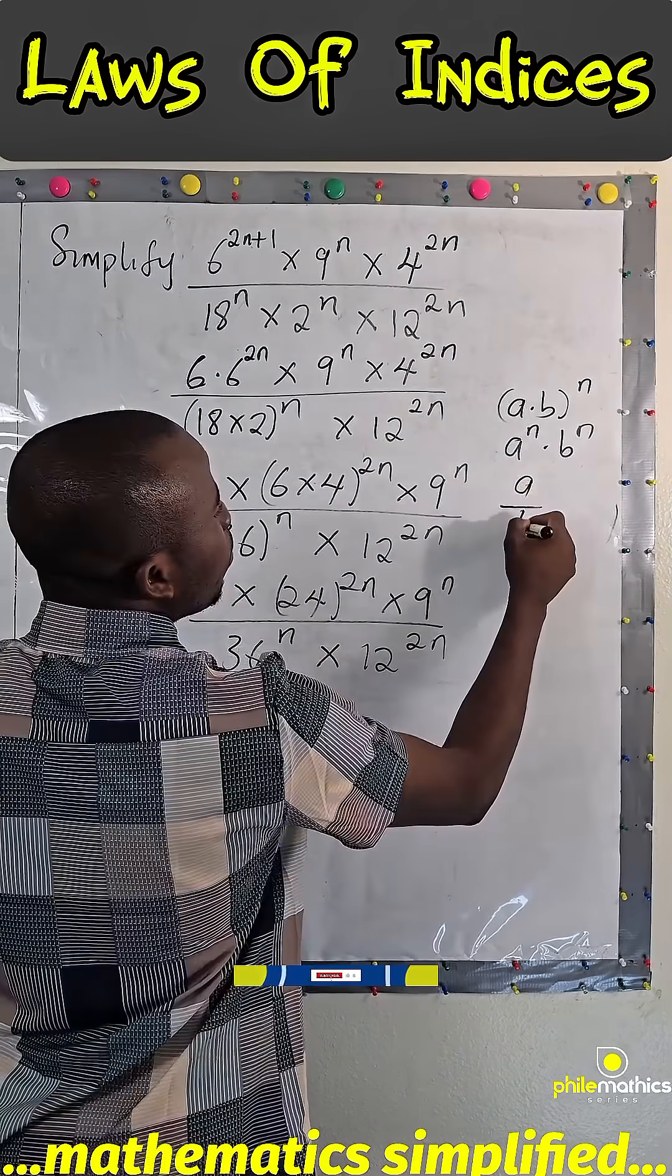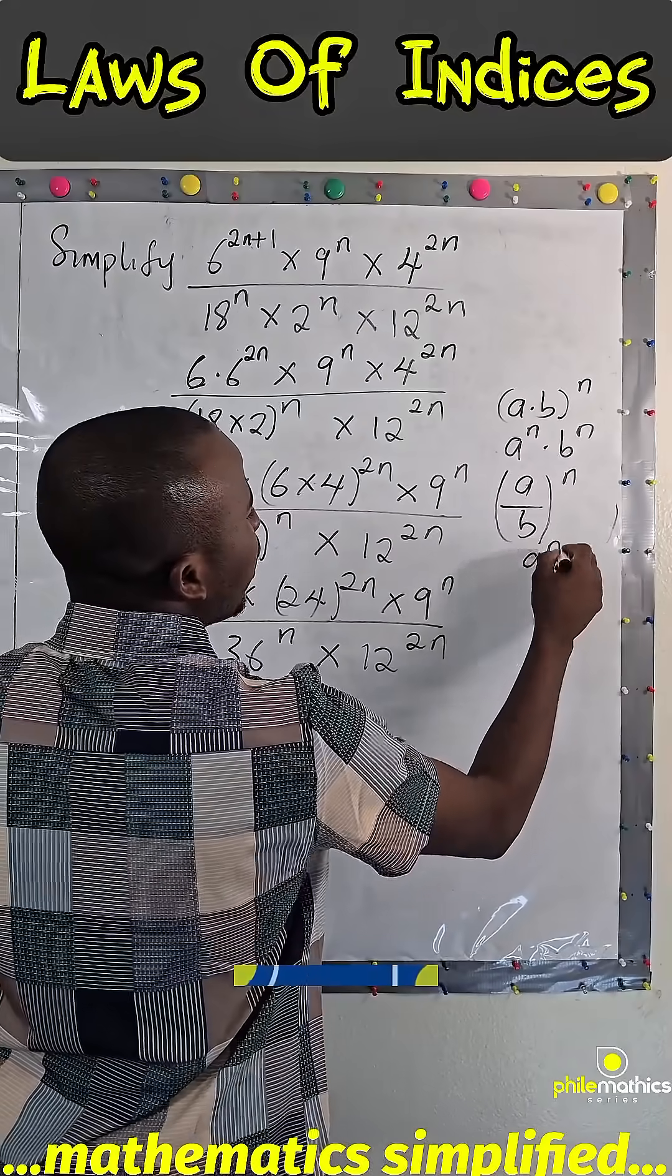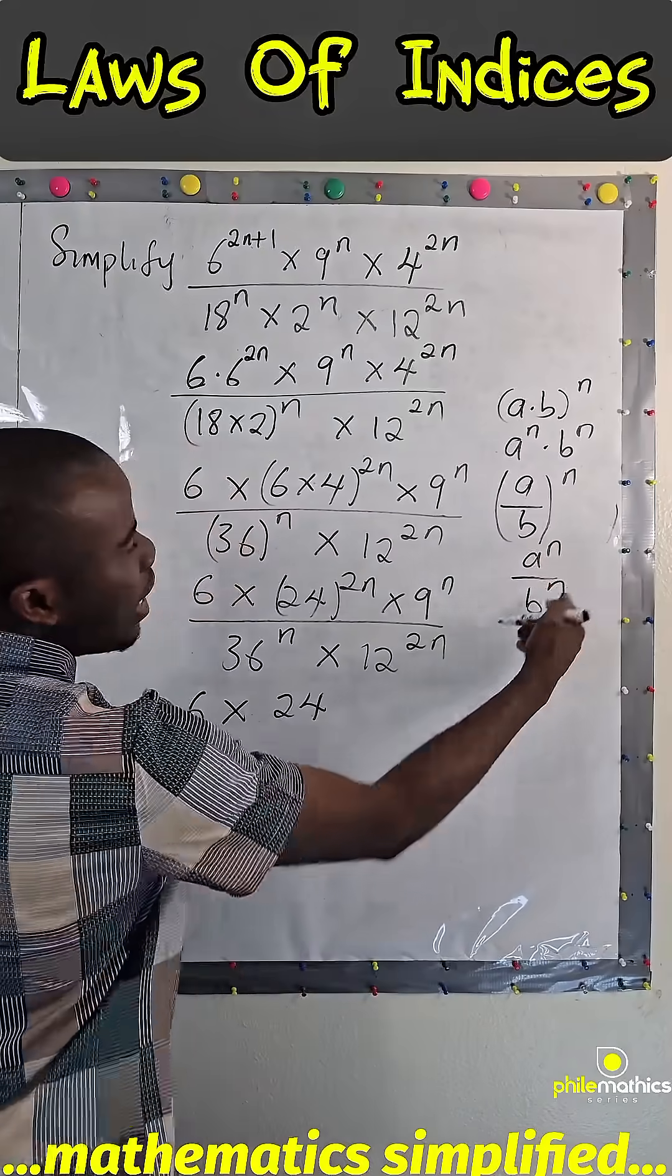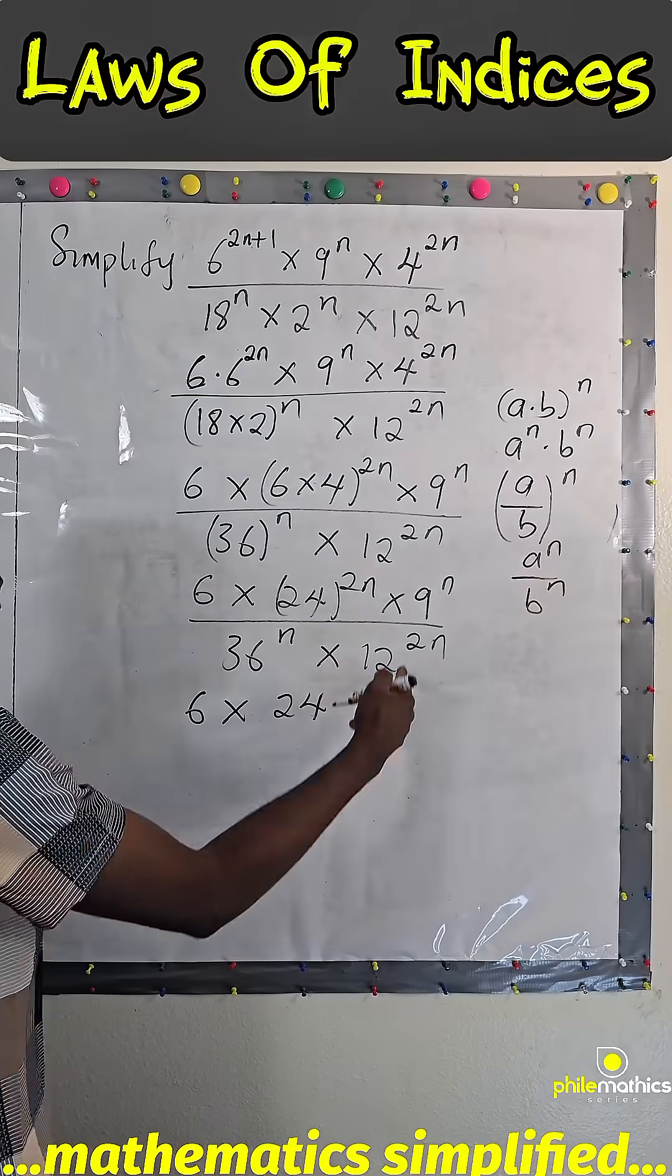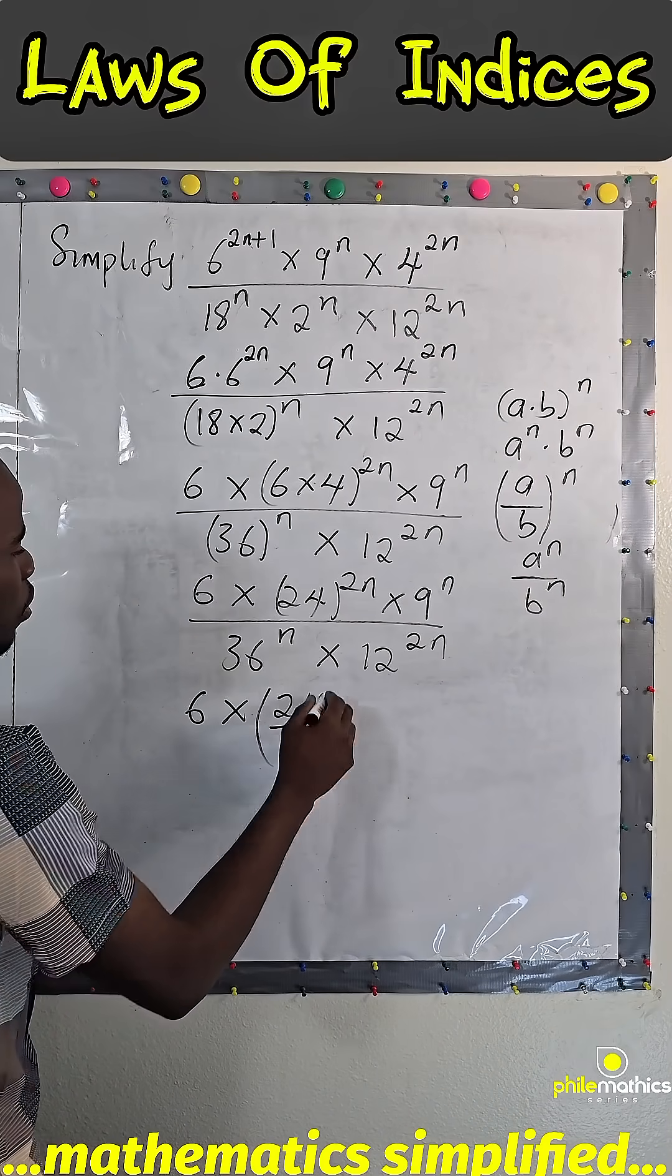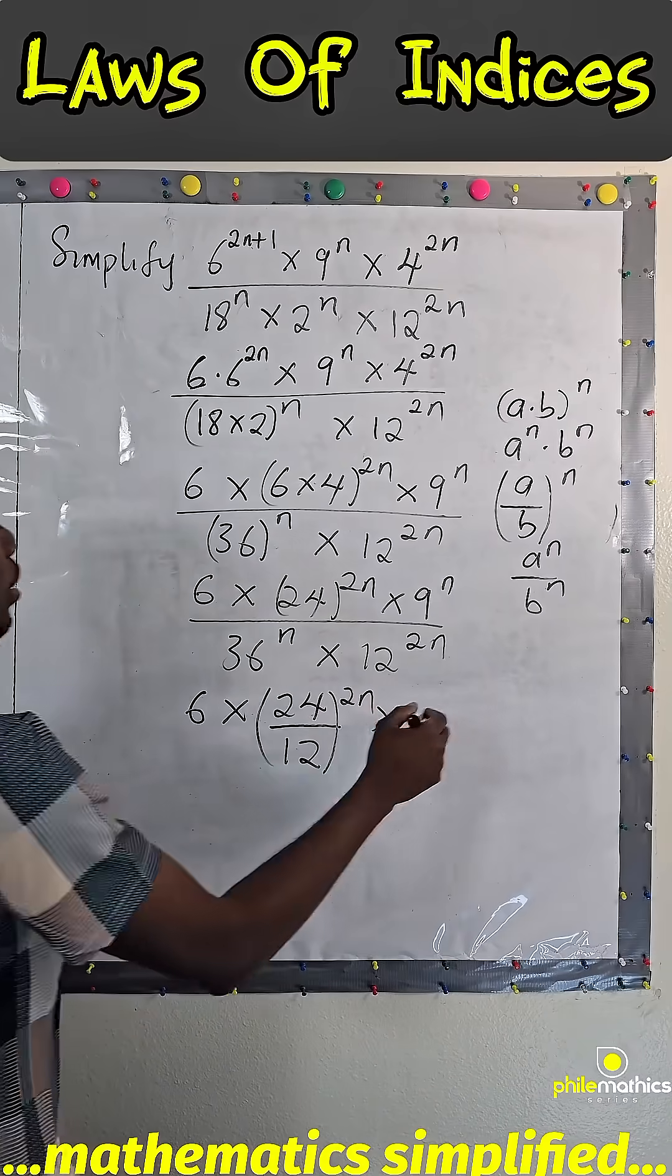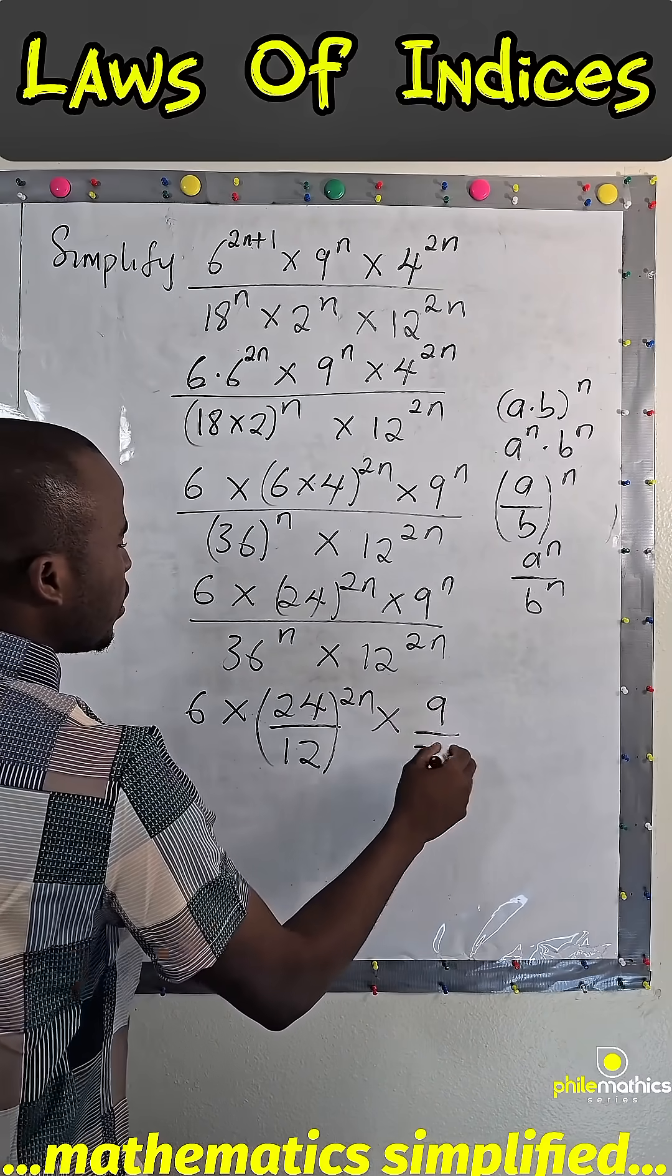we did here. If we have a over b to power n, the same thing as a power n over b to power n, so I can take this back to this. So these two can be written as 12, can be written as over 12 to power 2n, and this can be written as 9 over 36